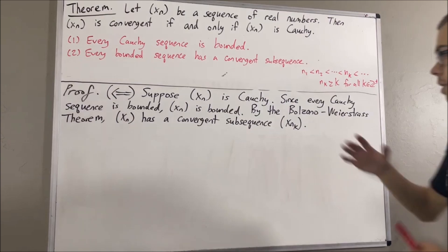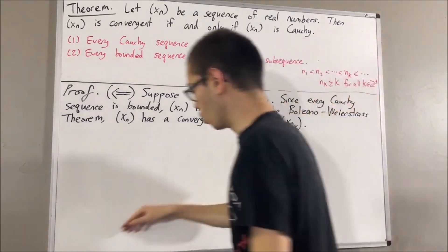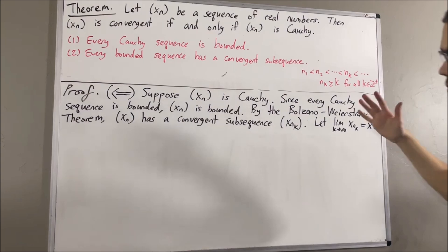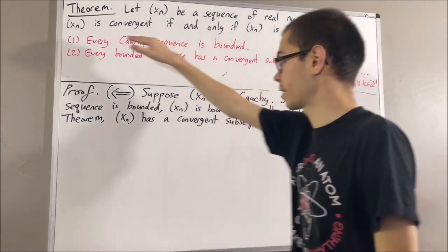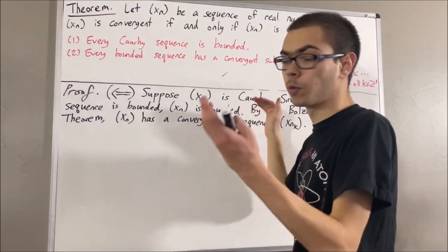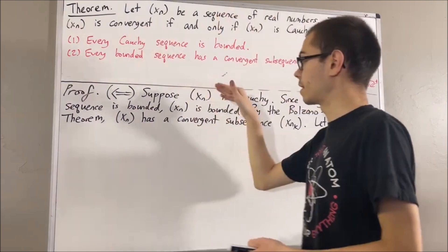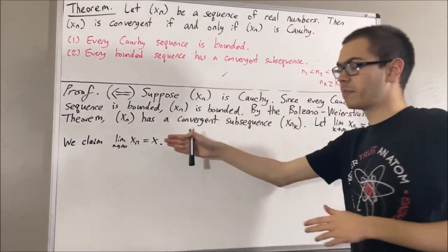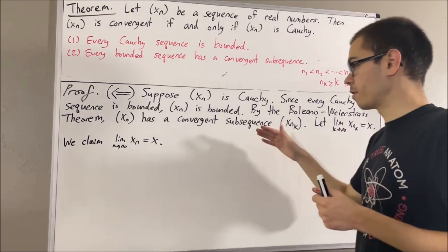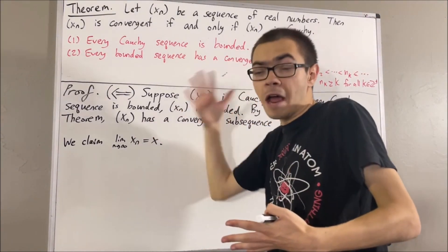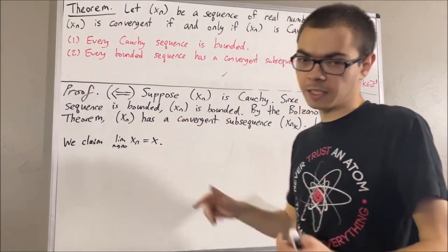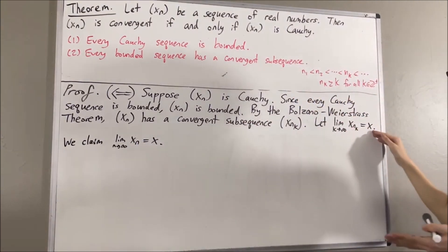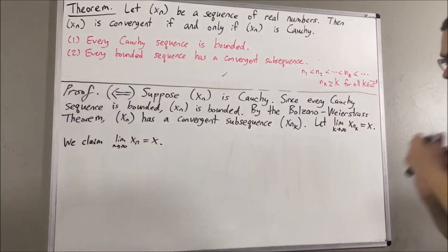Since xnk is a convergent subsequence, we're going to say that it converges to the value x. The whole goal has been to show if xn is Cauchy, then xn is convergent. We've supposed xn is Cauchy, and now we want to show xn is convergent. The claim is that xn converges to x as well. This claim makes sense because a property of subsequences tells us: if xn converges to x, then every subsequence of xn also converges to x. So to prove this, let's go back to the definition of convergence of a sequence.